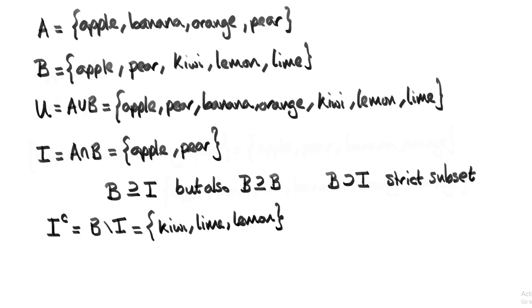What if we take the intersection between I and its complement? By definition, the complement of I is everything not in I, so there are no elements in the intersection. This is a special set called the empty set.